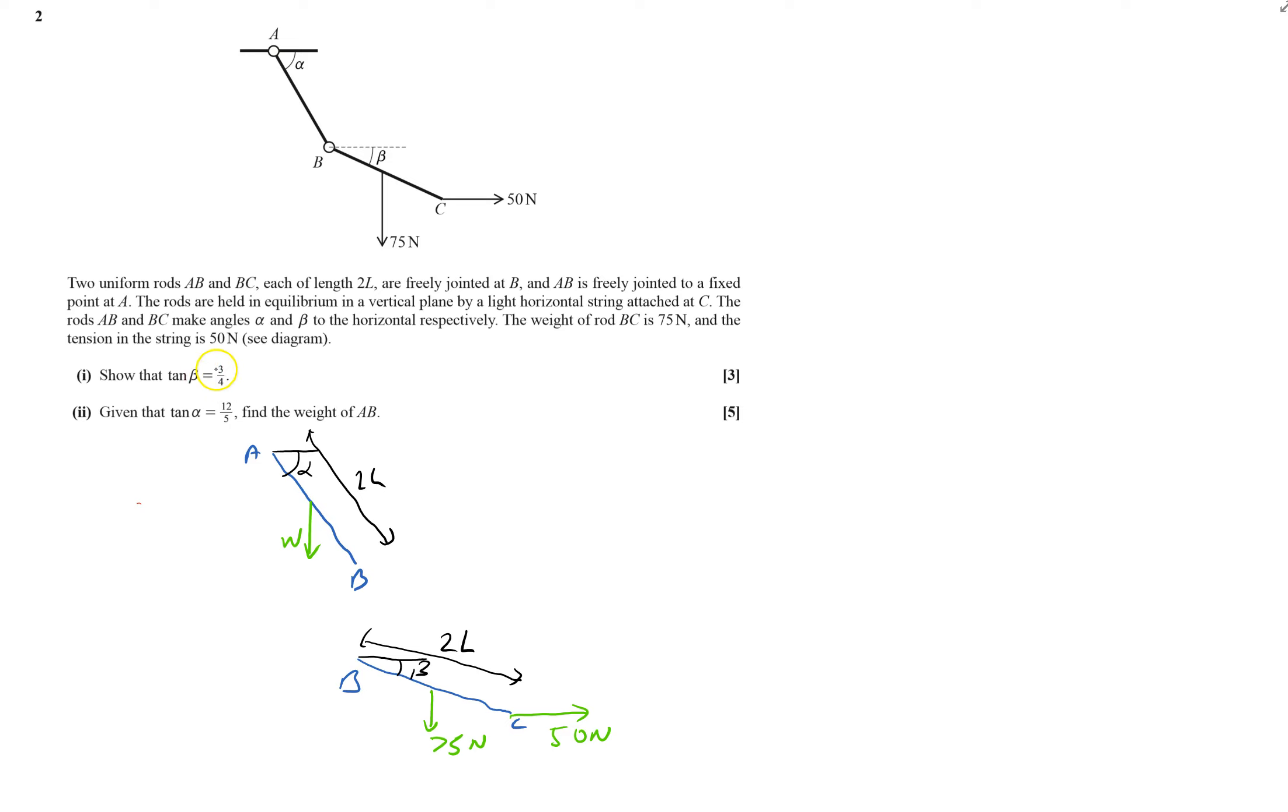Tan beta is 3 quarters. So that means that opposite over adjacent is 3 over 4. So 3 over 4. It's going to be a 3, and that's beta there. It's going to be a 3, 4, 5 triangle. It may or may not be helpful.